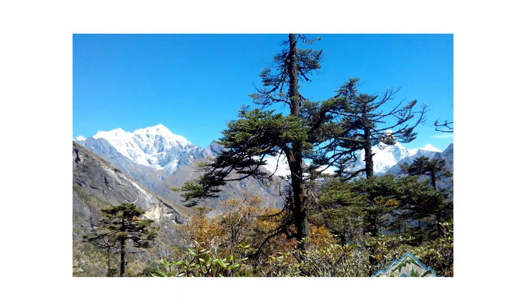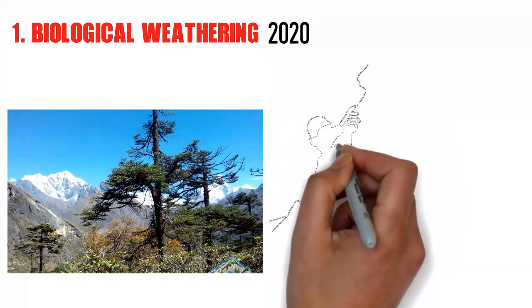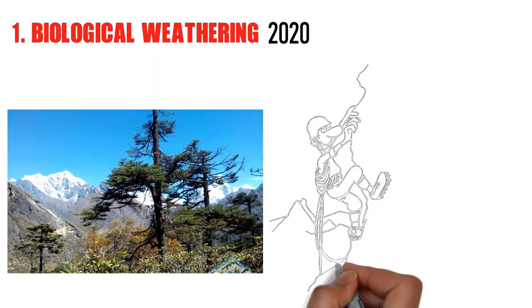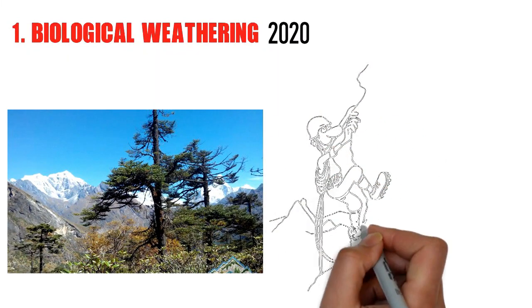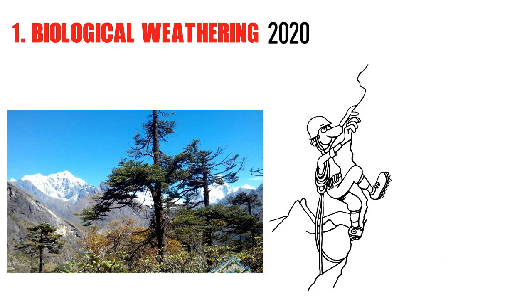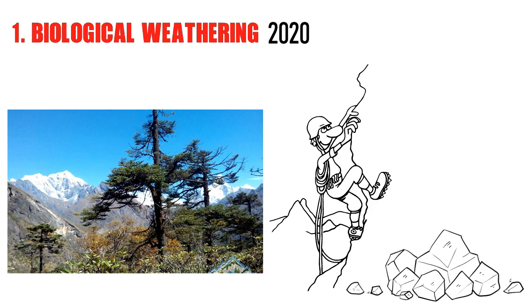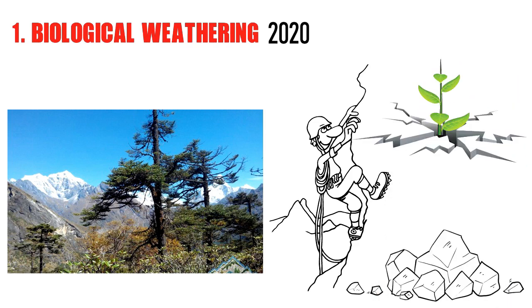We're now going to look at the three types of weathering. In 2020, it was discovered that shrubbery plants and mosses have started growing on Everest. And if you do hiking, you must have also seen plants growing out of rocks. These are examples of biological weathering, because when there is a gap inside a rock, the roots of plants can enter inside those cracks. And when those roots grow over time, they become big and strong enough to break the entire rock.